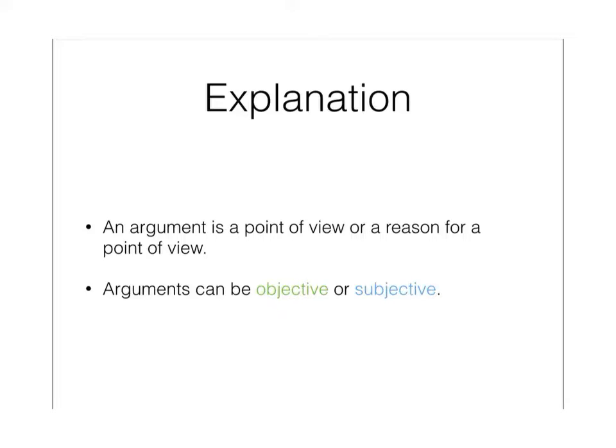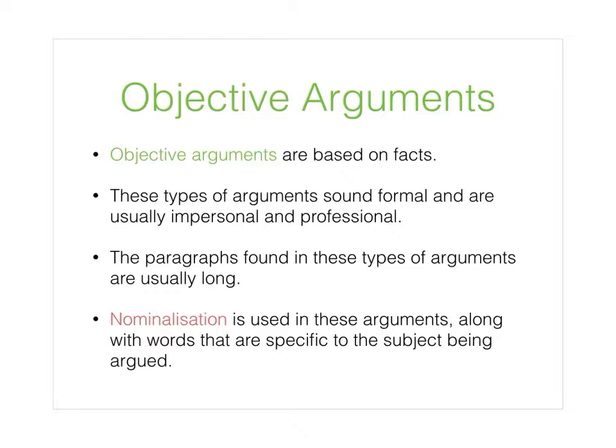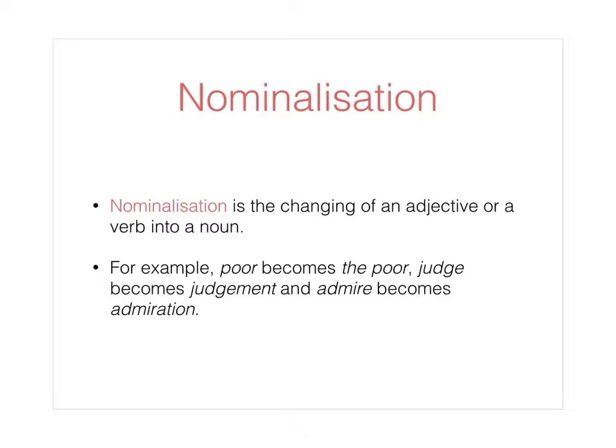Arguments can be objective or subjective. Objective arguments are based on facts. These types of arguments sound formal and are usually impersonal and professional. The paragraphs found in these types of arguments are usually long. Nominalisation is used in these arguments, along with words that are specific to the subject being argued.